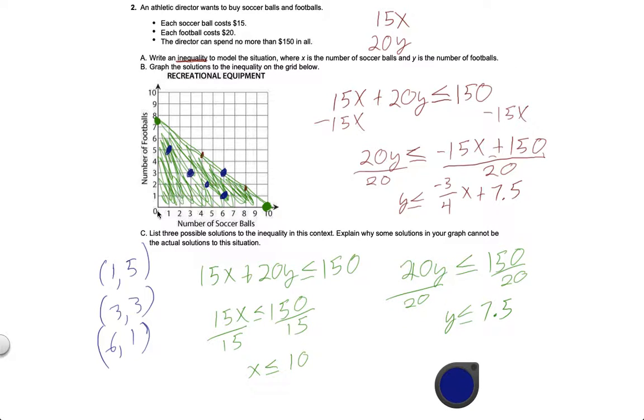So, any of the fractions, right? Any of the fractions because this green part fills in all of our fractions, too. I could have 1.0001 soccer balls and one football. That's in there. That's in the shaded part. But it doesn't make any sense because you can only buy whole values of the ball. You can only buy one soccer ball at a time or one football at a time. You can't buy fractions of the ball. And that's why some of the solutions in the graph are not actual solutions to the situation.